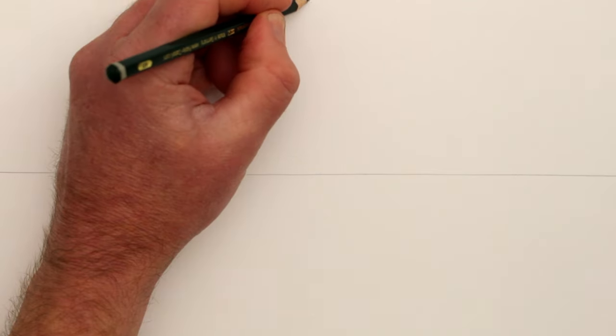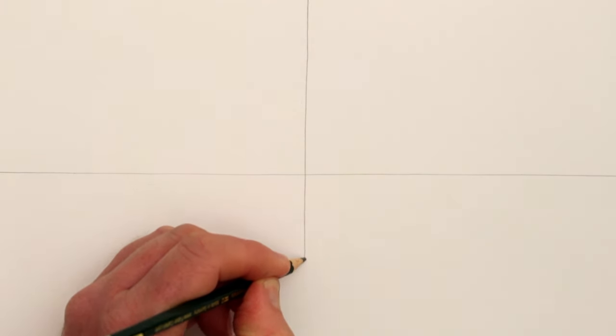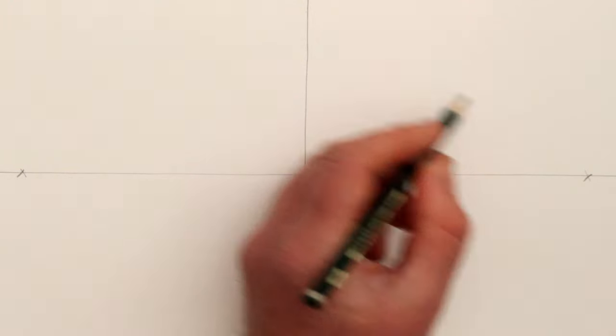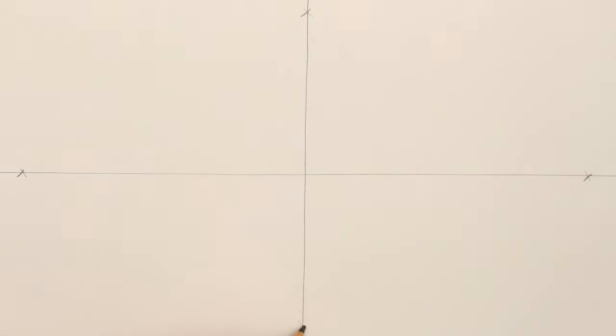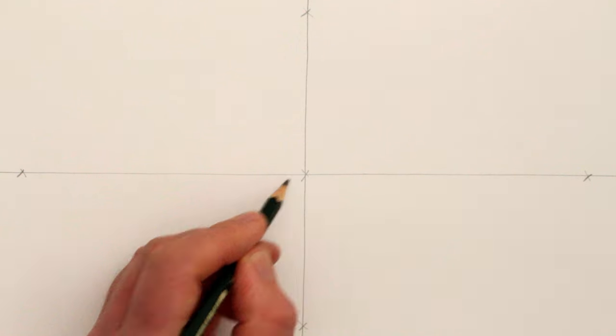The first step is to draw a horizontal line in the middle of the page and then a vertical line in the middle of this horizontal line. Next draw a mark or a cross at the end of each of these lines and then one more cross in the middle.